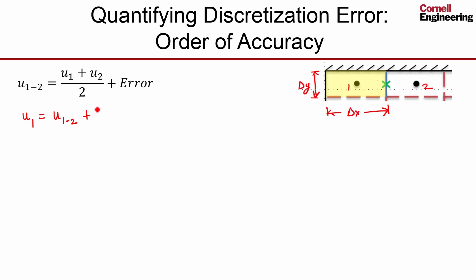If this distance is delta x, then that distance is delta x over 2. So first I need the derivative, the derivative du/dx, that's the derivative in the x direction at the face, at 1,2, times this distance.